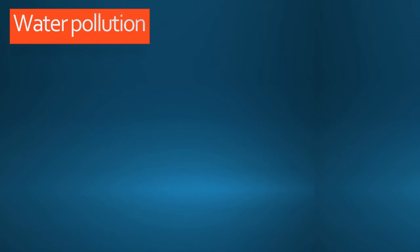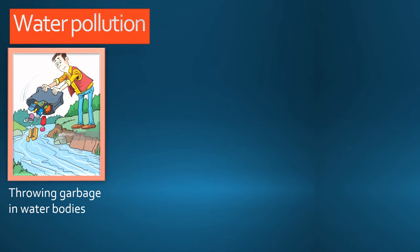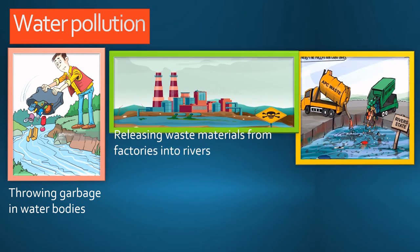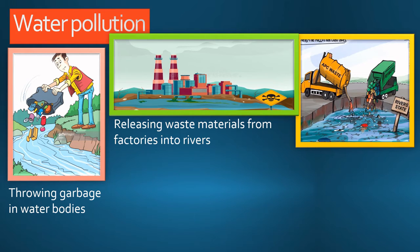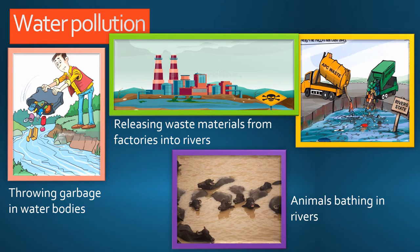Water pollution. Now let us see why water is getting polluted. Some people are throwing garbage in water bodies such as rivers, lakes, ponds and ocean. Waste material is released from factories into rivers, and animals are also bathing in rivers. All these are creating water pollution. Polluted water can cause many diseases. If the water gets very polluted, fish and other animals living in the water may die. We should not drink polluted and dirty water.